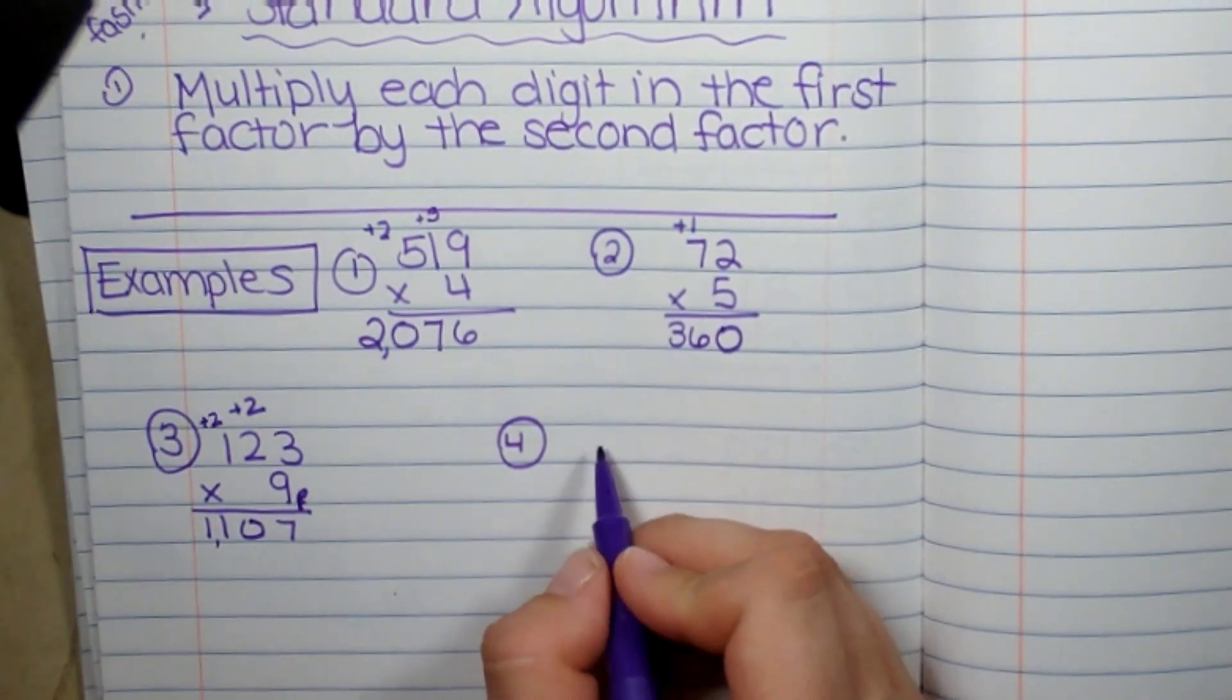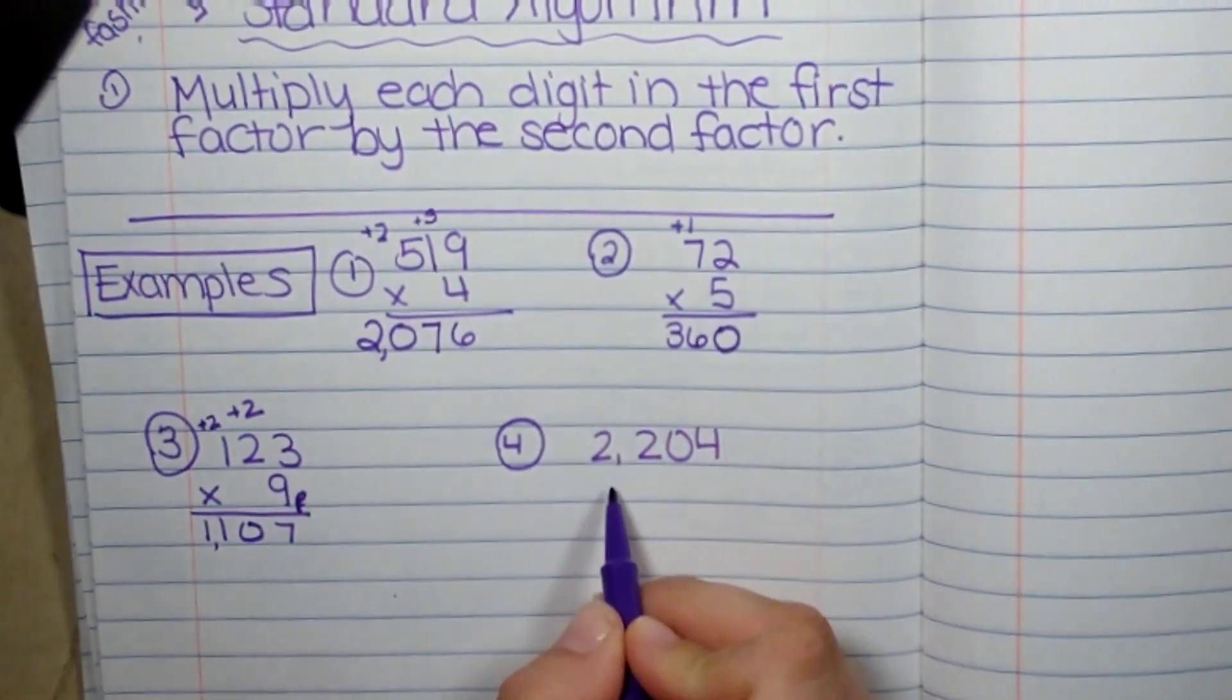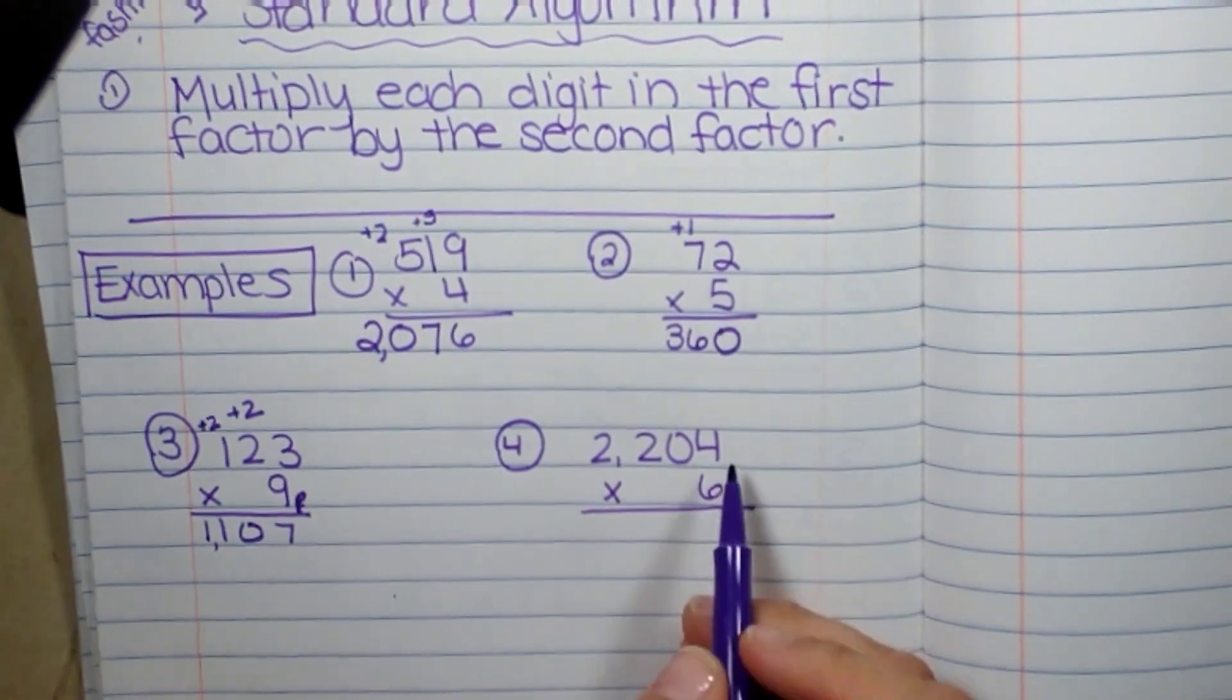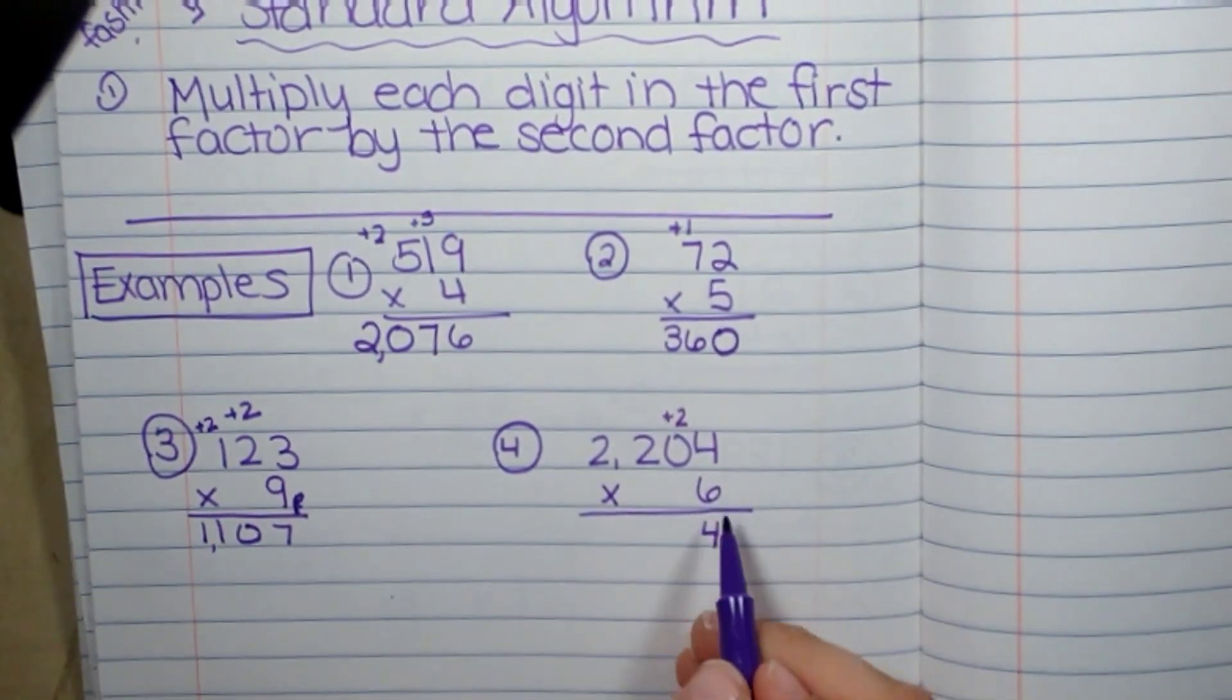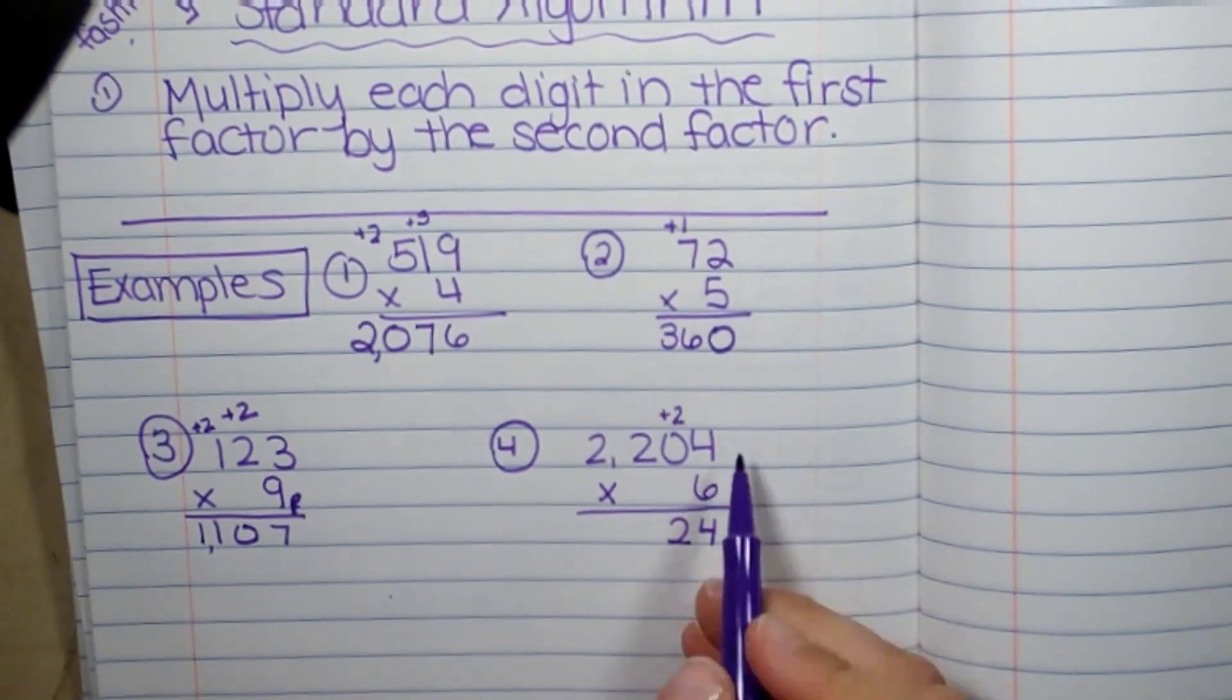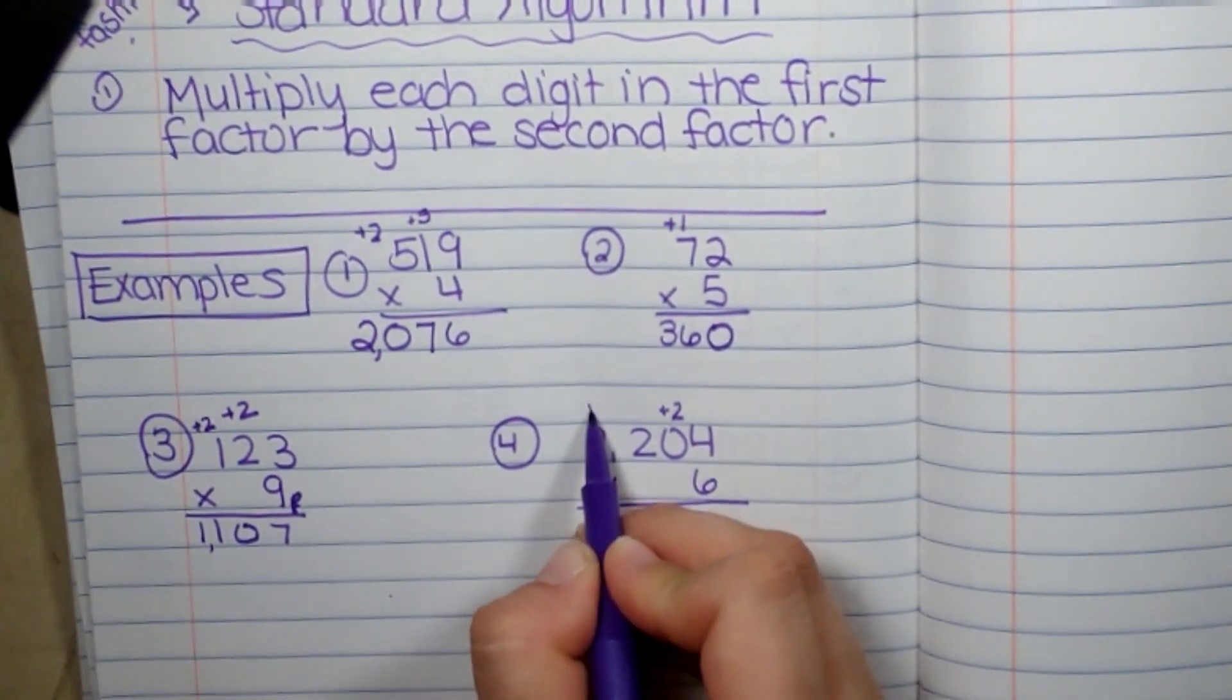And then the last one we're going to do is 2,204 times 6. 4 times 6 is 24. 6 times 0 is 0. Don't forget to add your 2. 6 times 2 is 12. Put my 2 and add my 1.